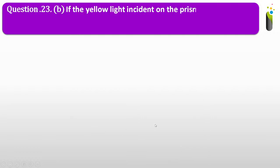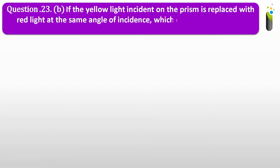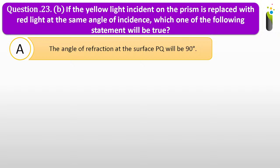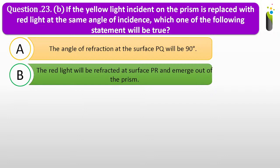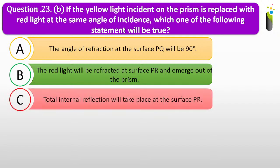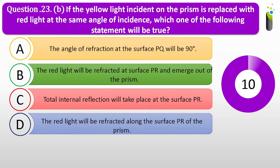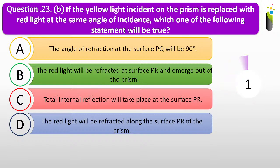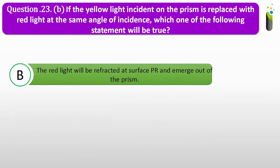Question number twenty-three B. If the yellow light incident on the prism is replaced with red light at the same angle of incidence, which one of the following statements will be true? A, the angle of refraction at surface PQ will be 90 degrees. B, the red light will be refracted at surface PR and emerge out of the prism. C, total internal reflection will take place at surface PR. The correct answer is B: the red light will be refracted at surface PR and emerge out of the prism.